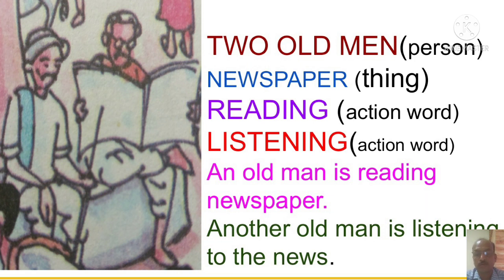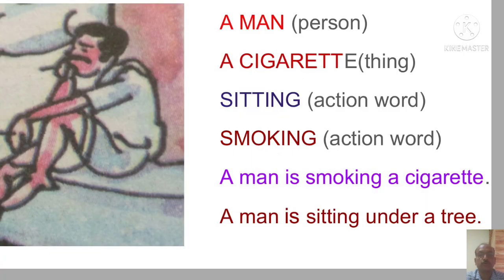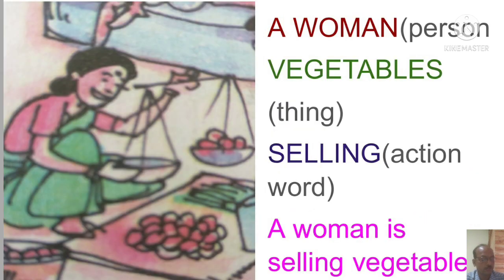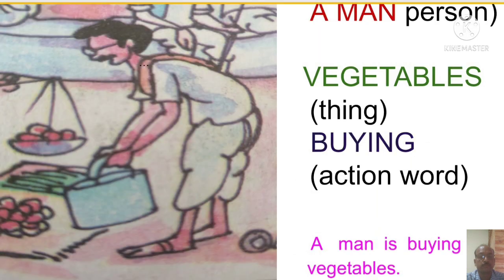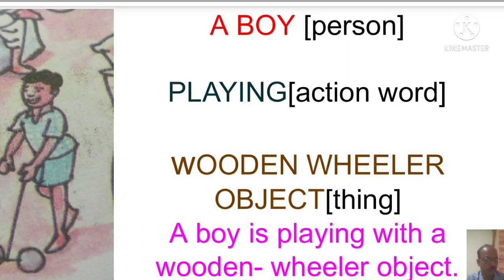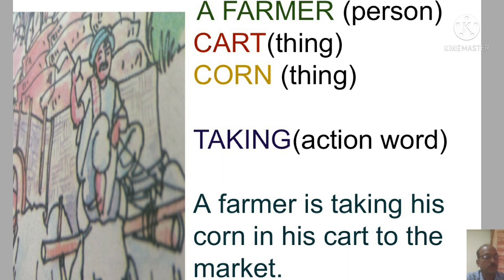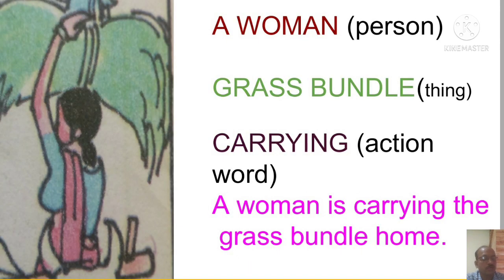In the middle of the street of the village, two men are there. An old man is reading a newspaper. Another old man is listening to the news. A man is smoking a cigarette. A man is sitting under a tree — you can write two sentences here. A woman is selling vegetables. A man is buying vegetables. A boy is playing with a wooden wheeled object. A farmer is taking his corn in his cart to the market. A woman is carrying the grass bundle home.